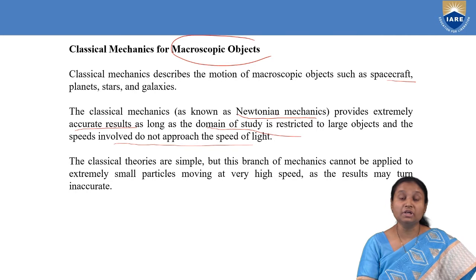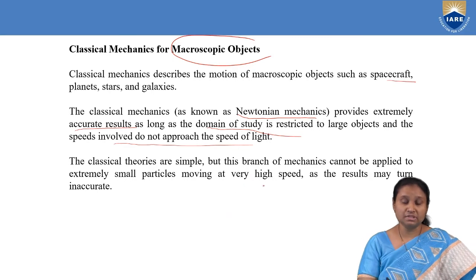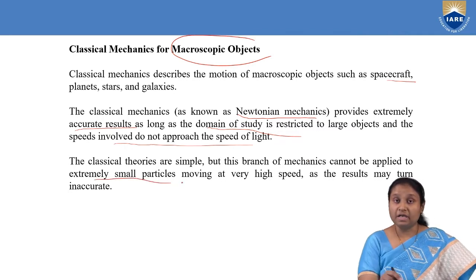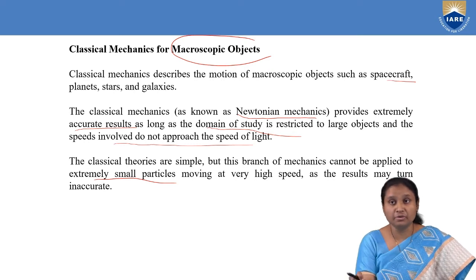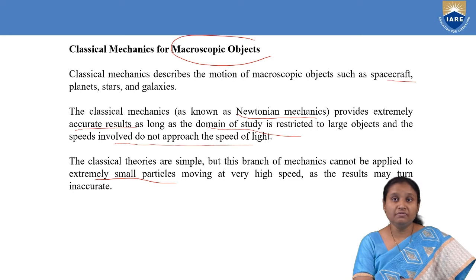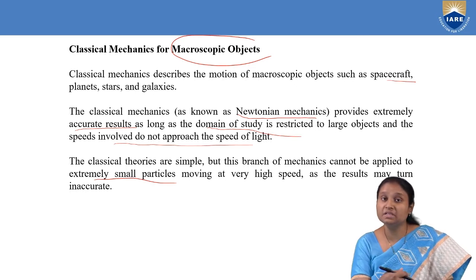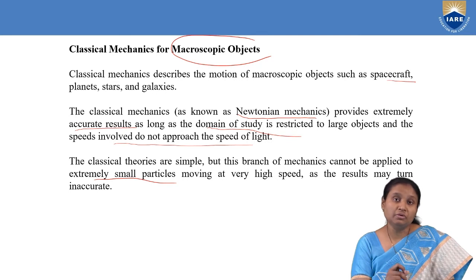The main disadvantage of classical mechanics is that when you try to apply it to extremely small particles — at atomic or micro dimensions — it fails. These small particles have the property of traveling with very high speeds, and when talking about their motion at such speeds, classical theory fails. It cannot give accurate results or describe their accurate speeds.